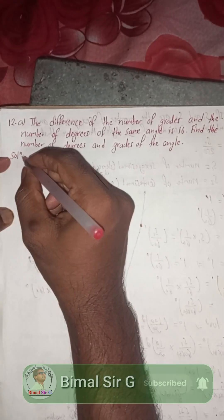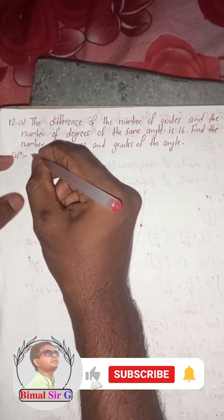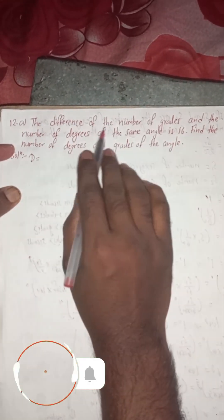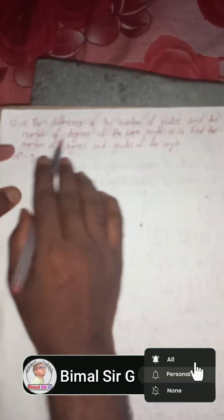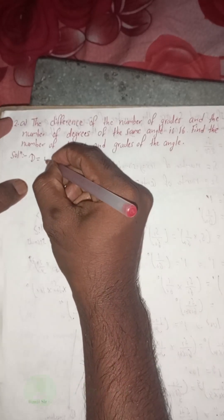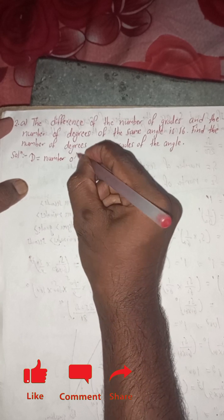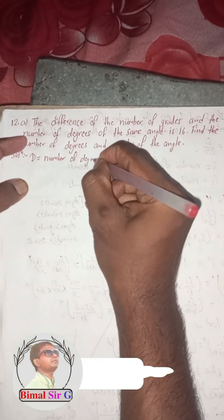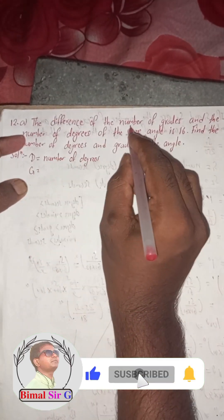So here is the solution. Suppose D is equal to the number of degrees, and G is equal to the number of grades.